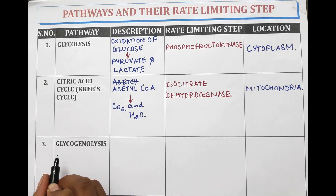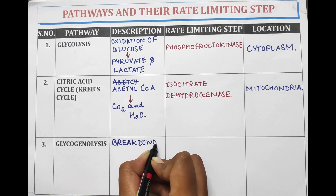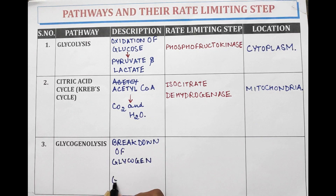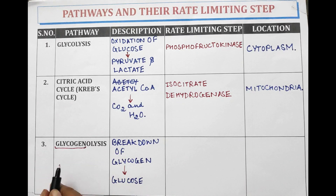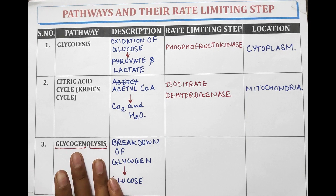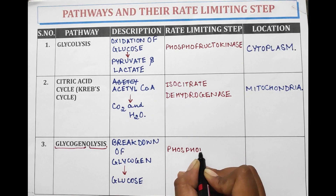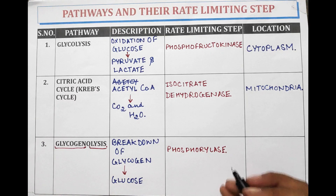Next pathway is glycogenolysis. Glycogenolysis means breakdown of glycogen into glucose, as its name suggests. The rate limiting step in glycogenolysis is phosphorylase, and the location of glycogenolysis is cytosol.